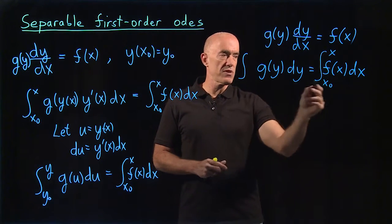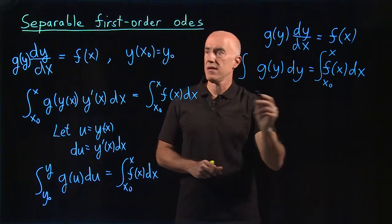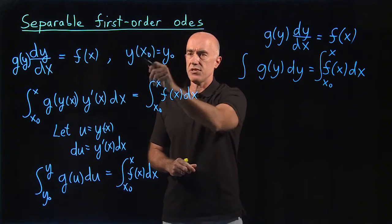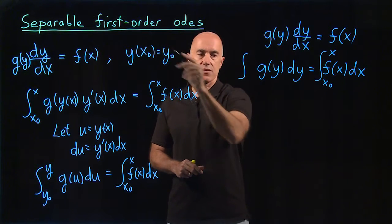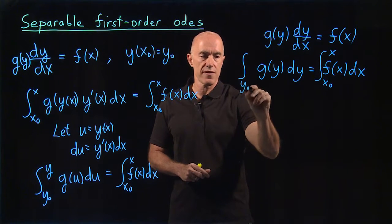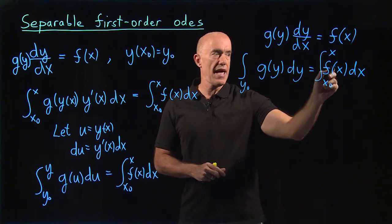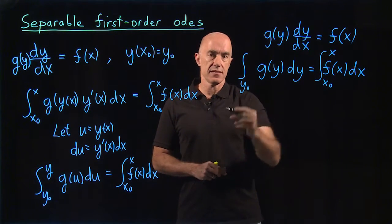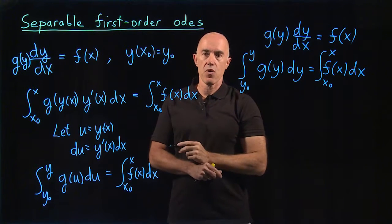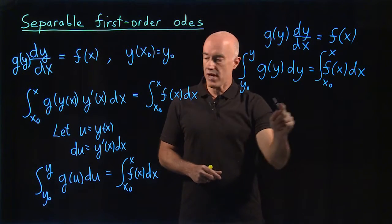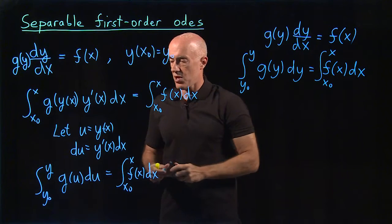And on the left, when you integrate from x naught to x, using the initial condition here, when x equals x naught, y is equal to y naught. So you integrate from y naught, and when x is the value of x, then y is the value of y, integrate to y. So this equation is the same as this one below.